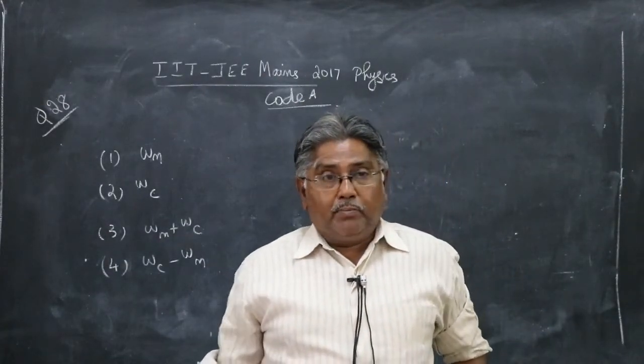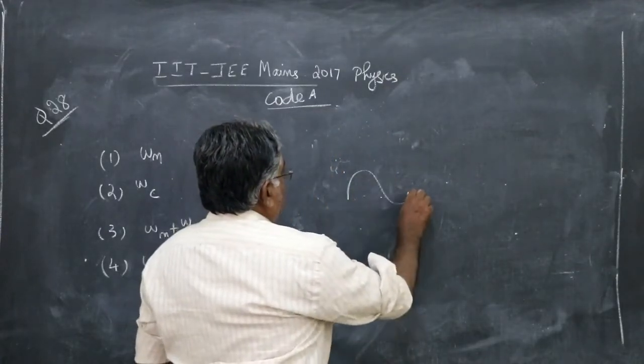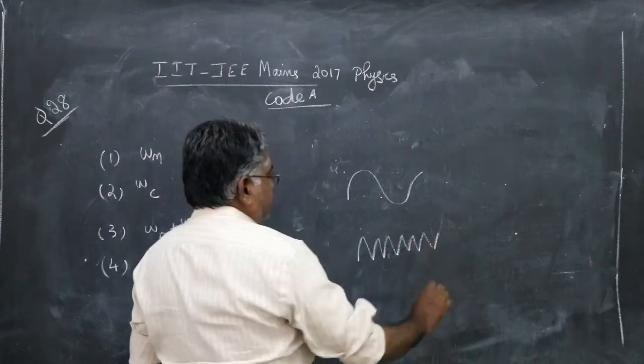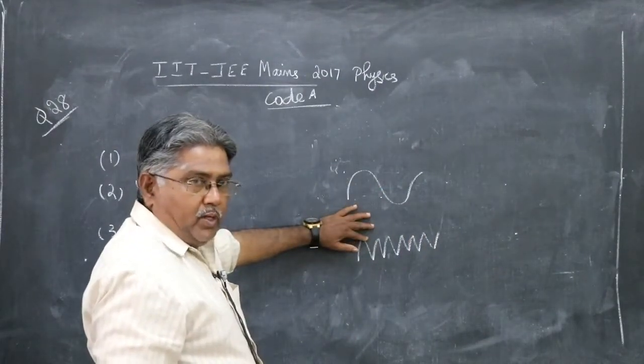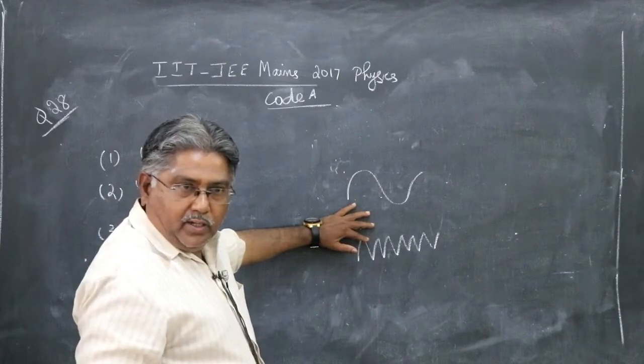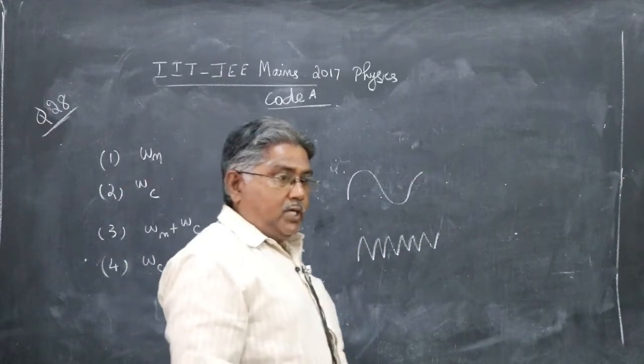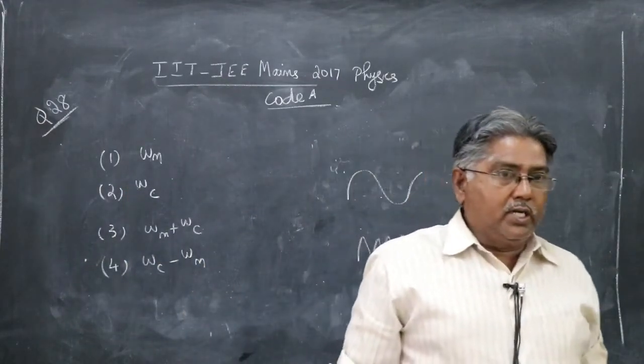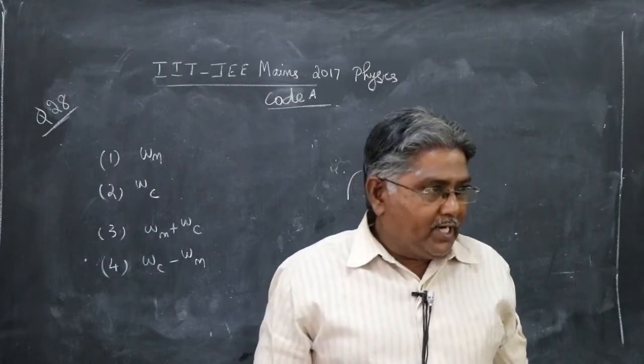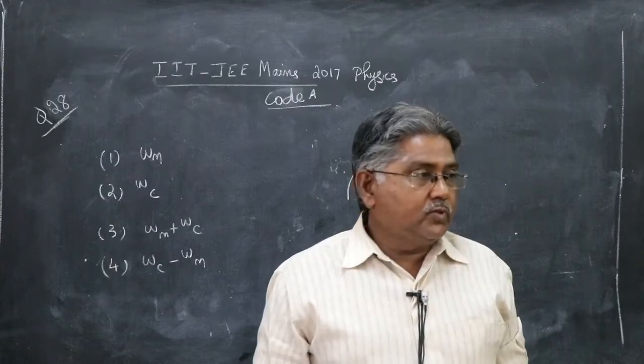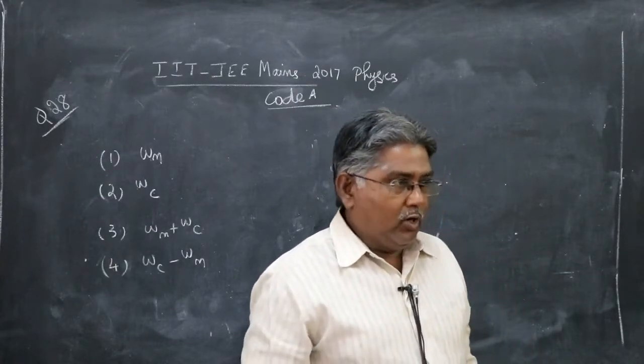So in amplitude modulation, you have signal and you have carrier. When you modulate these two, you will get the result, the modulated wave. The frequency of the modulated wave is not single one. The modulated wave totally will have three frequencies. Here we refer to angular frequencies.